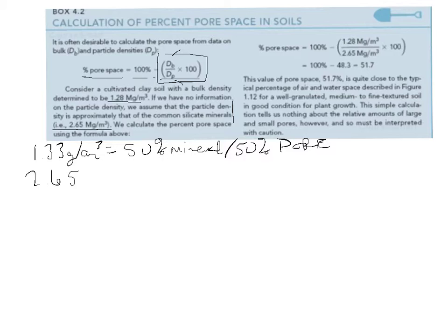So in this case, what we do is we take the bulk density that we get from the field, 1.28, we divide it by 2.65, we multiply that value by 100...